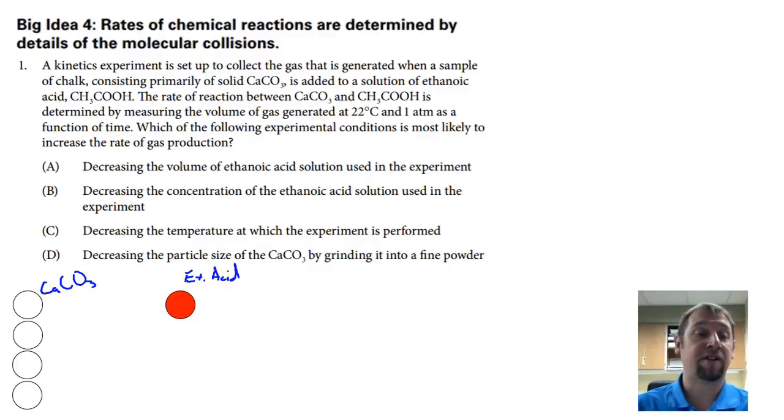One would be to increase the number of molecules. If we increase the number of calcium carbonate or we increase the number of ethanoic acids, we're going to get more collisions. Therefore the rate of the reaction will increase. Method one is increase the number of molecules.